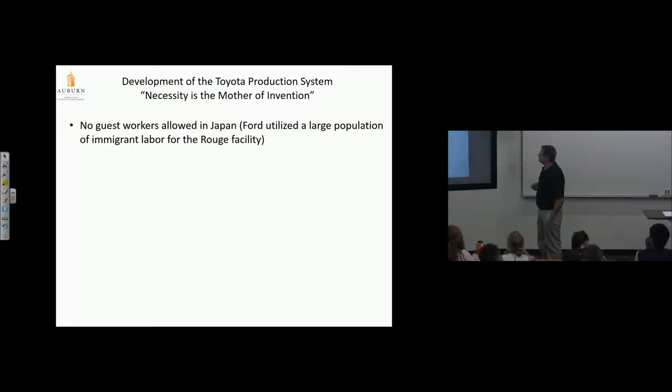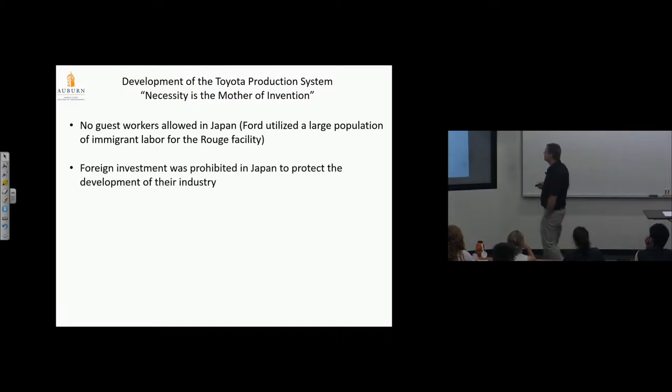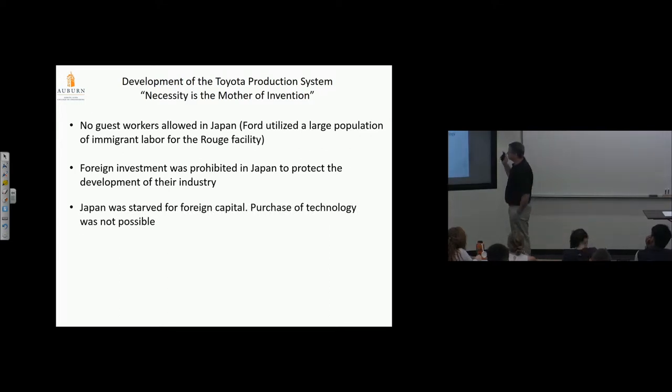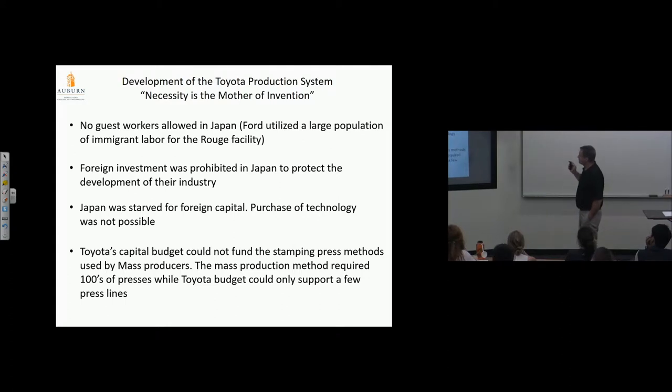No guest workers allowed in Japan—Ford utilized a large population of immigrant labor for the Rouge facility, so Toyota didn't have that available. Foreign investment was prohibited in Japan to protect the development of their industry, so there wasn't the infusion of cash or capital to buy thousands of presses. Japan was starved for foreign capital—purchase of technology was not possible.